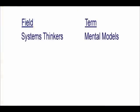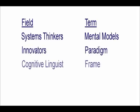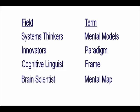Now, a mental model is a term we use as systems thinkers. If you are an innovator, you would use the term paradigm. If you are a cognitive linguist, you'd use the term frame. If you're a brain scientist, you would use the term mental map. It's literally the map of existing neural pathways in your brain — the sum total of everything you've thought about and all the connections you've made up until this moment. We have a question here.